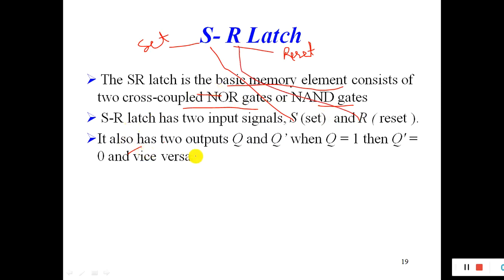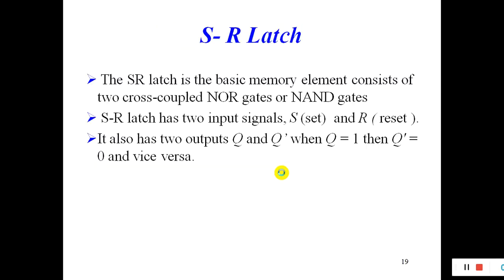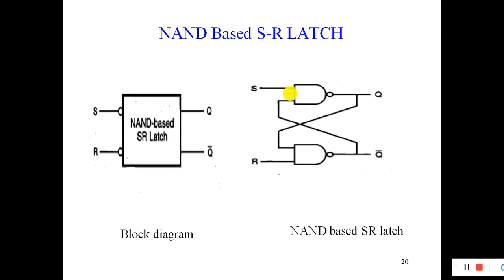The SR latch also has two outputs: Q and Q-bar, which are complementary to each other. When Q is equal to one, Q-bar will be zero, and vice versa. At any time, both cannot be zero or one simultaneously — they are always complementary to each other.